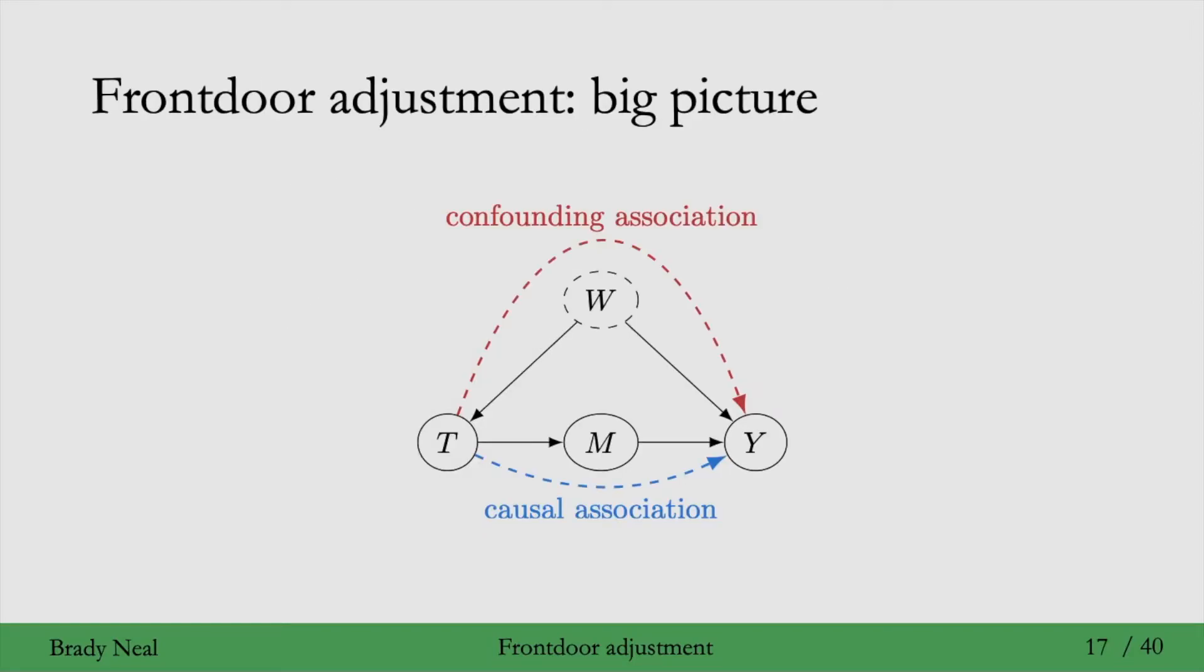So in this graph, we have causal association flowing along the directed path T to M to Y. And we have non-causal association, or confounding association, flowing along the backdoor path T to W to Y. The intuition for the frontdoor adjustment is that because we have this M here, and all of the causal association that we're interested in flows through M, if we just focus on M, then we can isolate the causal association.